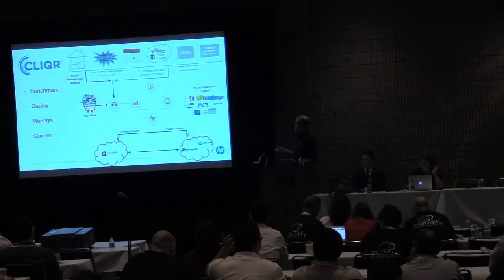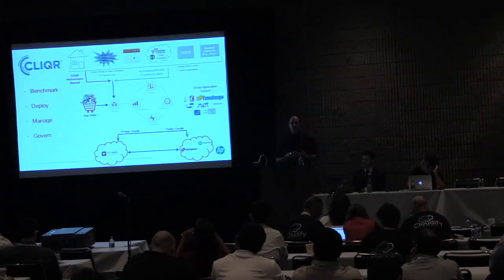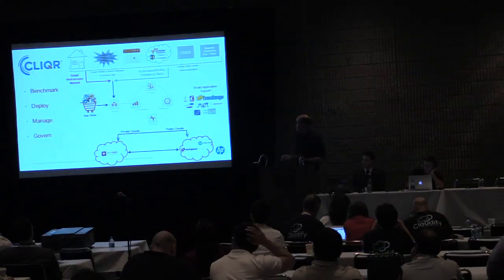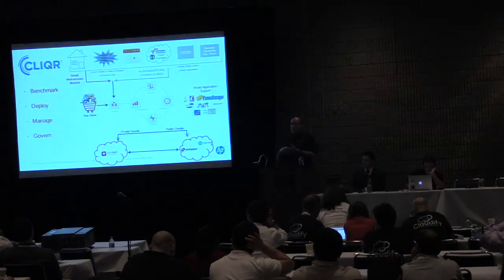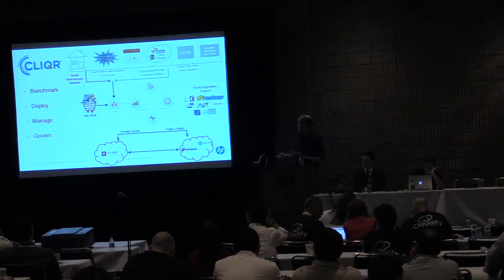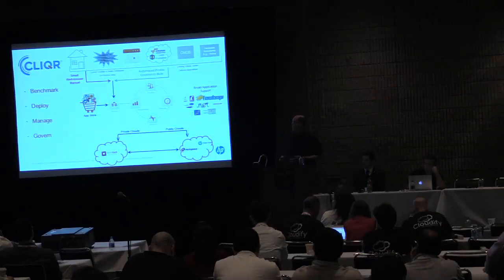You can either import an application profile from your existing set, or use our app store where we've already done that for commonly used open source applications like SugarCRM, Drupal, Joomla, and MediaWiki. Once you have that application profile, you have the ability to portably deploy applications on whatever cloud you want. We're talking primarily about OpenStack-based clouds today, though we support a lot of different cloud vendors.